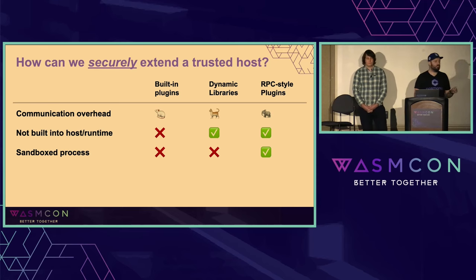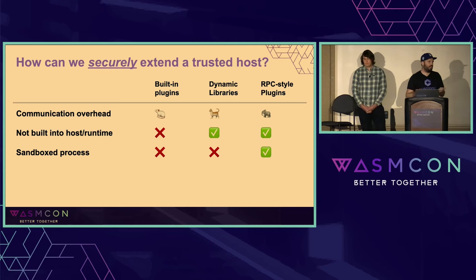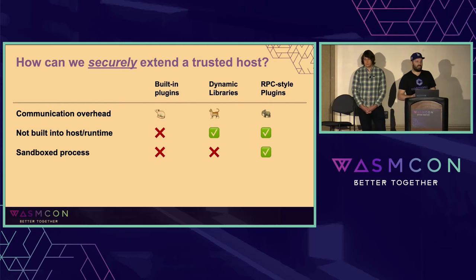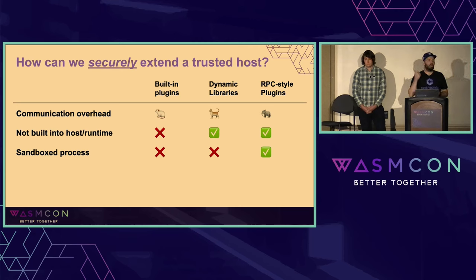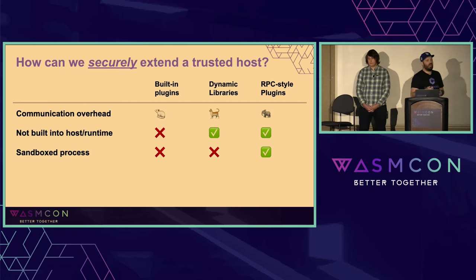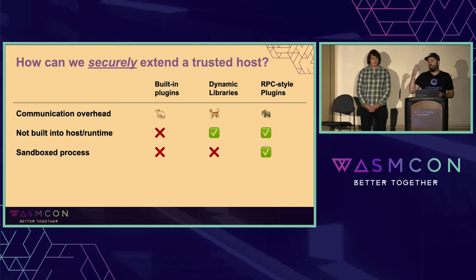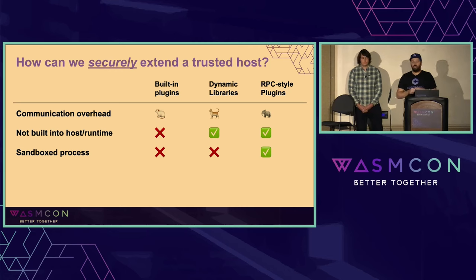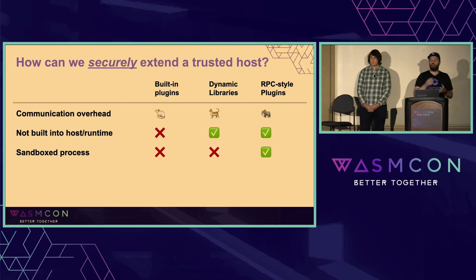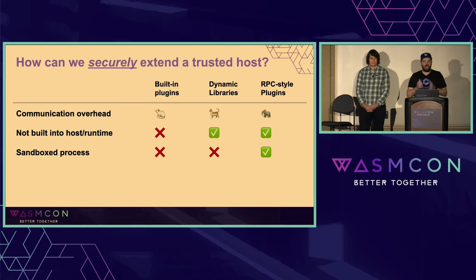The most important point around security is the sandboxing. Is it a sandboxed process? Built-in plugins: no. The Redis library has an issue with memory — you're kaput, they popped the whole thing. Dynamic libraries: same problem. Once you load a dynamic library, it is running in the same memory space, the same process space. You've now added that as trusted code. If there is a security issue, it has access to all the same memory. That is not a way you keep something sandboxed. RPC-style plugins, on the other hand, can be run anywhere — another OS process, C groups, a container, Microsoft's Hyperlite, Firecracker. They are external to your actual host process; you cannot share memories.